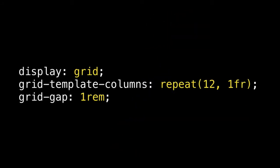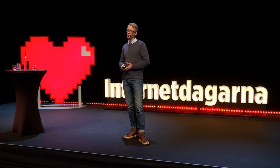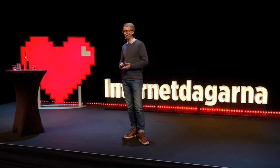To recap: to create a grid, we say display:grid. Then we define our tracks with grid-template-columns or grid-template-rows or both. And then if we want to, we can define a gap with grid-gap. What we've done so far is nothing we couldn't do with Flexbox or floats — it's more robust, but we could still do it with older techniques.